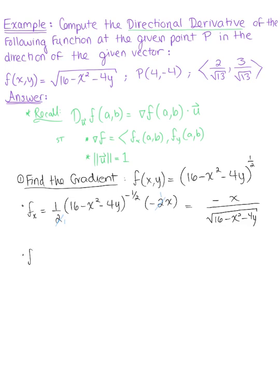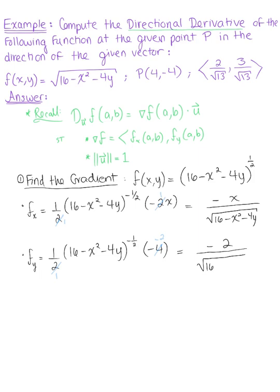The partial derivative with respect to y is very similarly 1/2 multiplied by (16 - x² - 4y)^(-1/2), multiplied by the derivative of the inside with respect to y, which gives us -4. We can simplify: 2 goes into 4 twice, leaving us with -2 all divided by √(16 - x² - 4y).